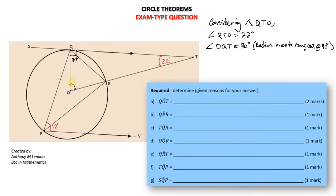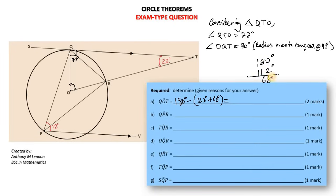By finding that angle, we now just have angle QOT to find. Angle QOT equals 180 degrees minus the sum of the two other angles, which is 22 degrees plus 90 degrees. That's 180 minus 112, which is 68 degrees. The reason: sum of angles in a triangle.